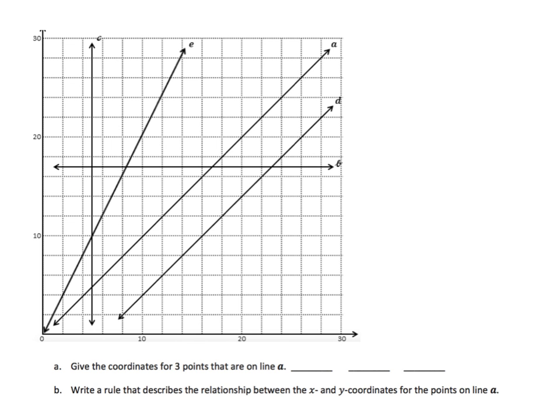Okay, so we have a fairly complex set of lines here. It says give 3 points that are on line A. Okay, line A is this one right here. And you'll notice that throughout here, if we look at our ordered pairs, if I go up to here on line A and to here, we'll see that I have 14 and 14. If I go here, I've got 20 and 20. No matter where we go on this one, I've got 10 and 10. We have the same values for x and y.